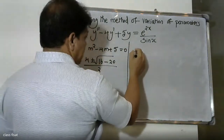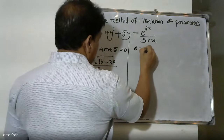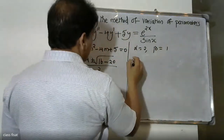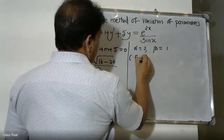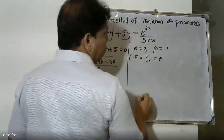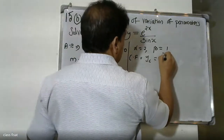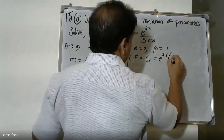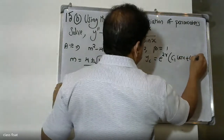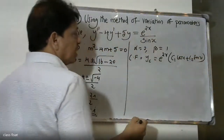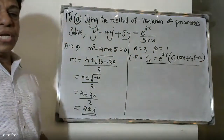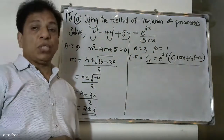Here alpha = 2 and beta = 1. Therefore the complementary function yc is equal to e^(2x) into (c1 cos x + c2 sin x). This is the complementary function.